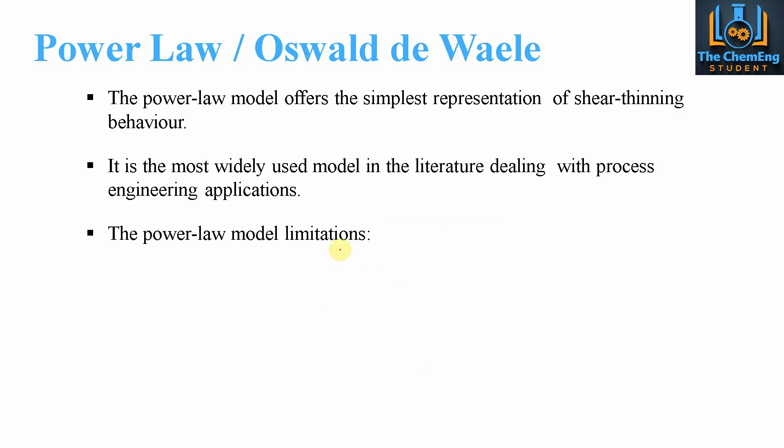The power law model offers a simplistic representation of the shear thinning behaviour and is the most widely used model within the literature for process engineering applications. Sometimes our system doesn't have to be modelled to a precise level of accuracy — sometimes we just need a generalised overview of the system and to see what kind of characteristics we are dealing with.